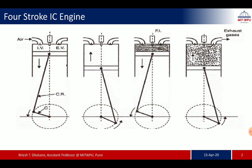As we studied in previous topics, this is the four-stroke IC engine — four-stroke because one cycle is completed in four strokes. Here you can see four different diagrams of the four strokes: suction, compression, power, and exhaust. In the suction stroke, air is taken inside the cylinder in a CI engine, and in an SI engine, the charge — that is, the air-fuel mixture — is taken inside the cylinder.